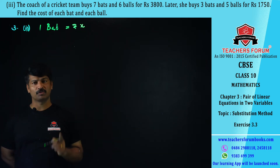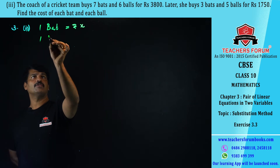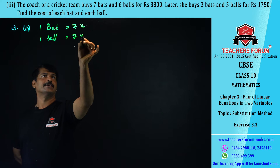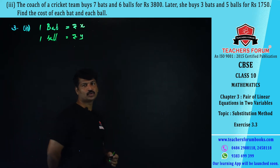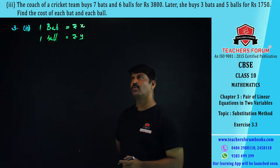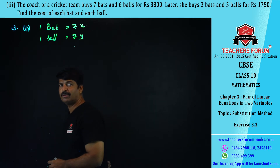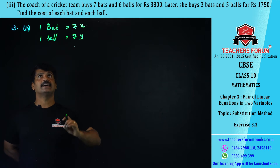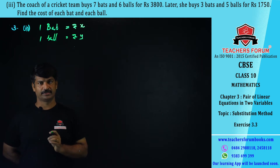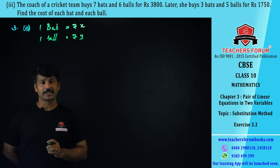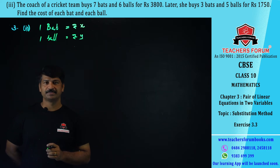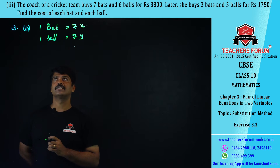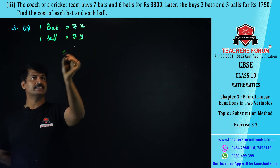x is the cost of one bat and the cost of one ball is rupees y. Now let us read the question — it is given that seven bats and six balls together cost rupees 3800. The cost of seven bats will be 7x, and the cost of one ball is rupees y.